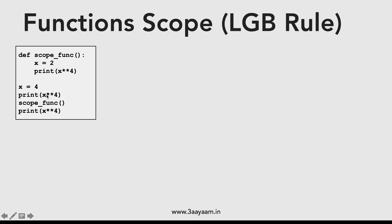This function is called only once. Before calling the function, I'm printing x to the power 4 where x is 4. The moment it goes inside of the function, x becomes 2 and we print x to the power 4 again. After the function is done, I'm coming out and printing x to the power 4 once more.